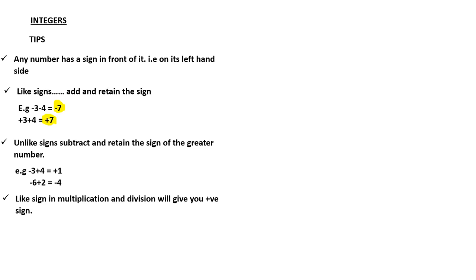Tip number four: like signs in multiplication and division will give you a positive sign. If two numbers have the same sign and you are either multiplying or dividing, the result will always be positive. For example, negative two times negative three gives positive six; positive two times positive three also gives positive six. Negative four divided by negative two gives positive two; positive four divided by positive two also gives positive two.